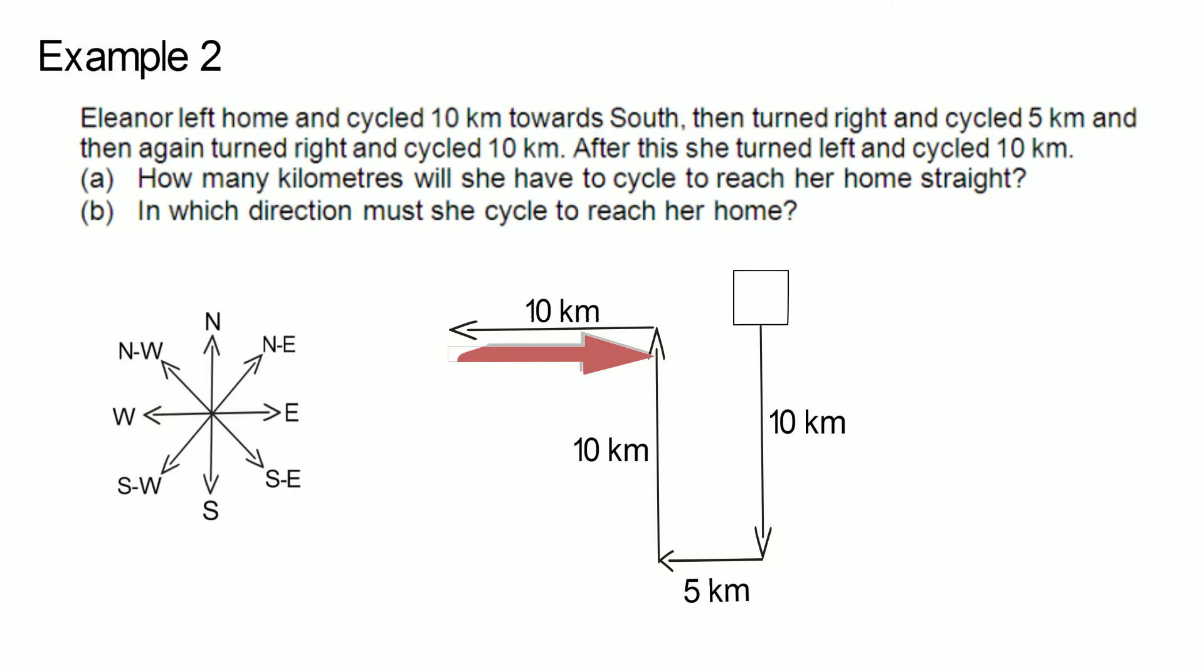To get home, Eleanor must travel this 10 kilometers and this 5 kilometers so that the total distance she must cover to get back home is 10 plus 5 kilometers, which is 15 kilometers. The direction in which she must travel is east.